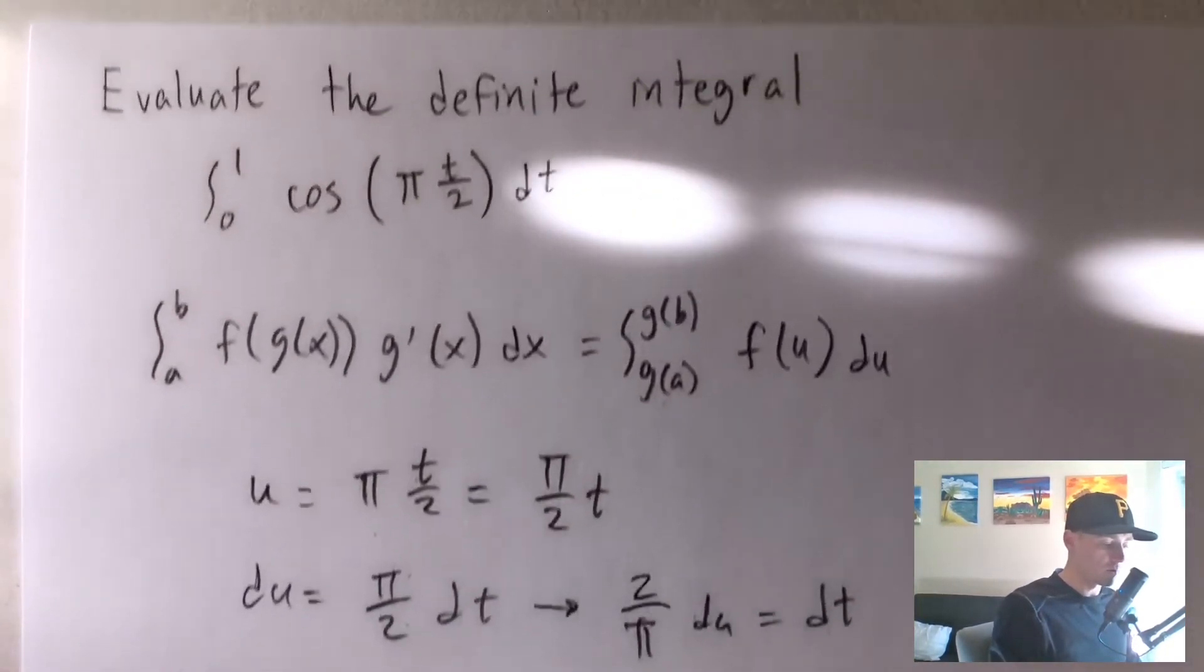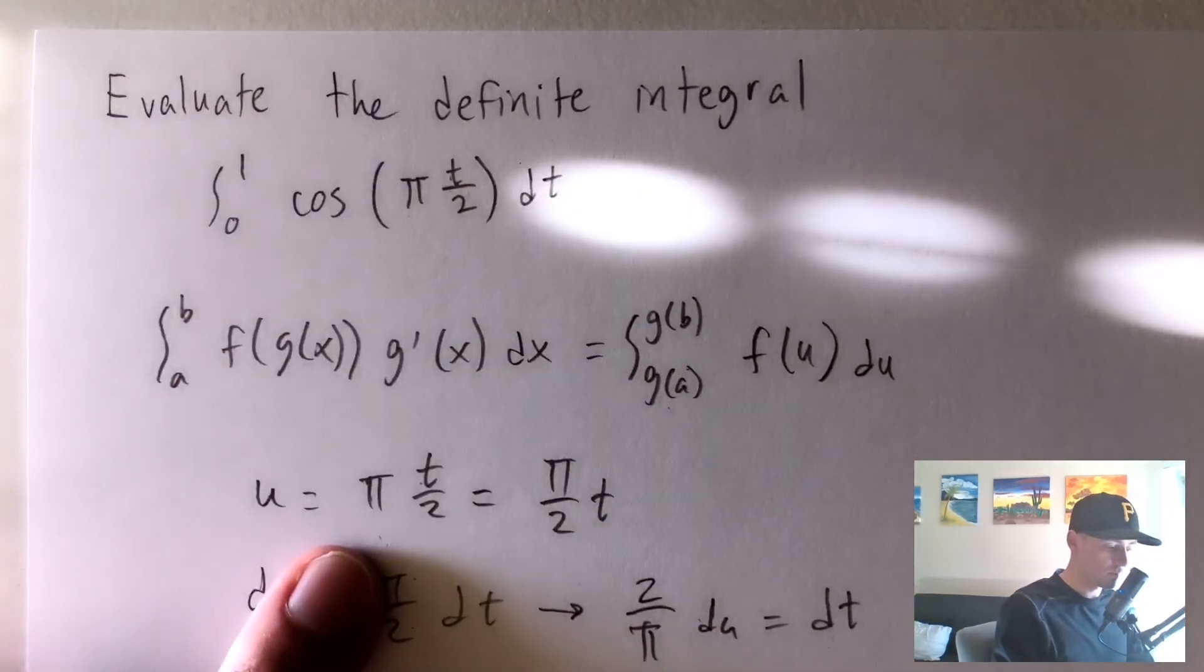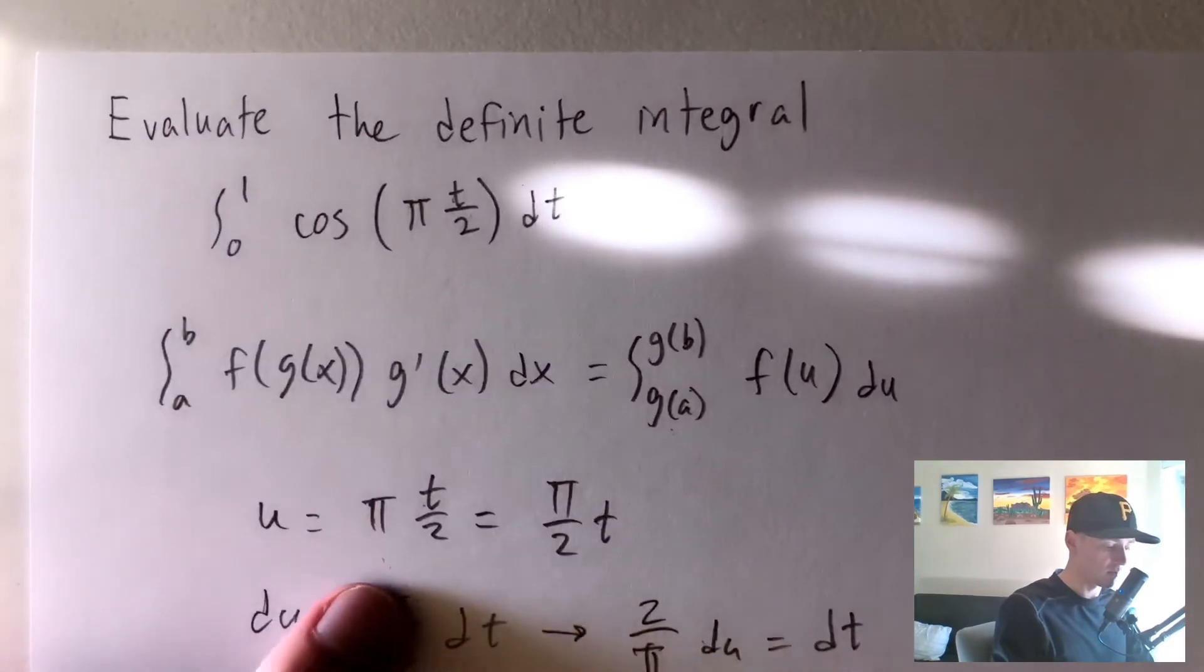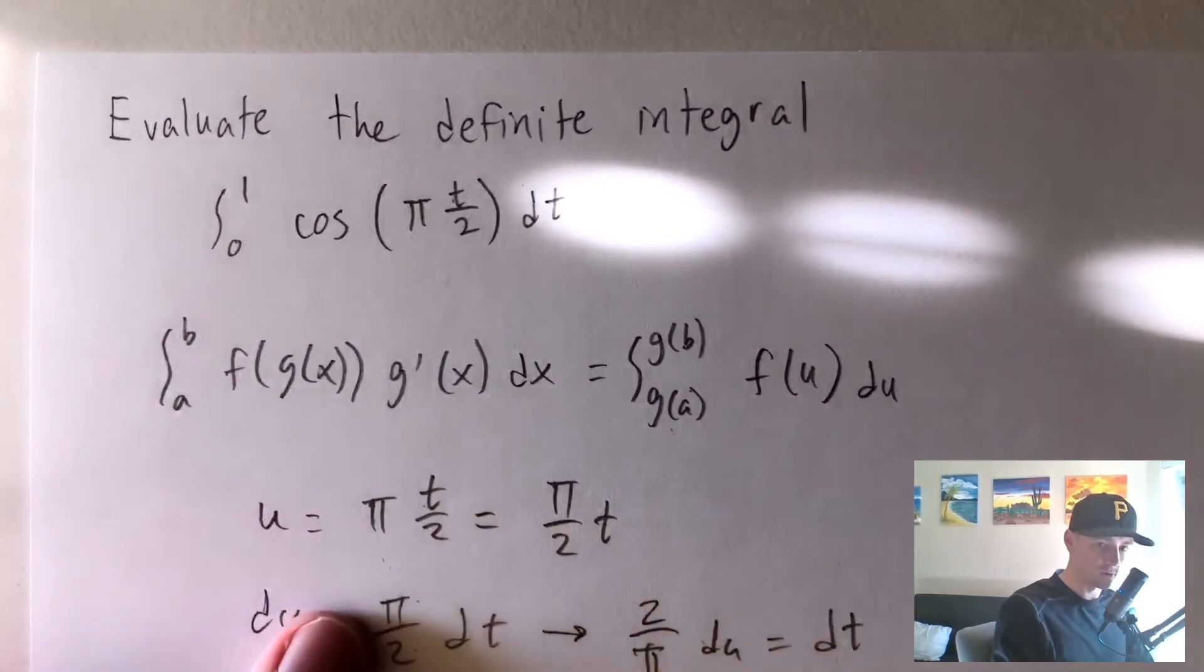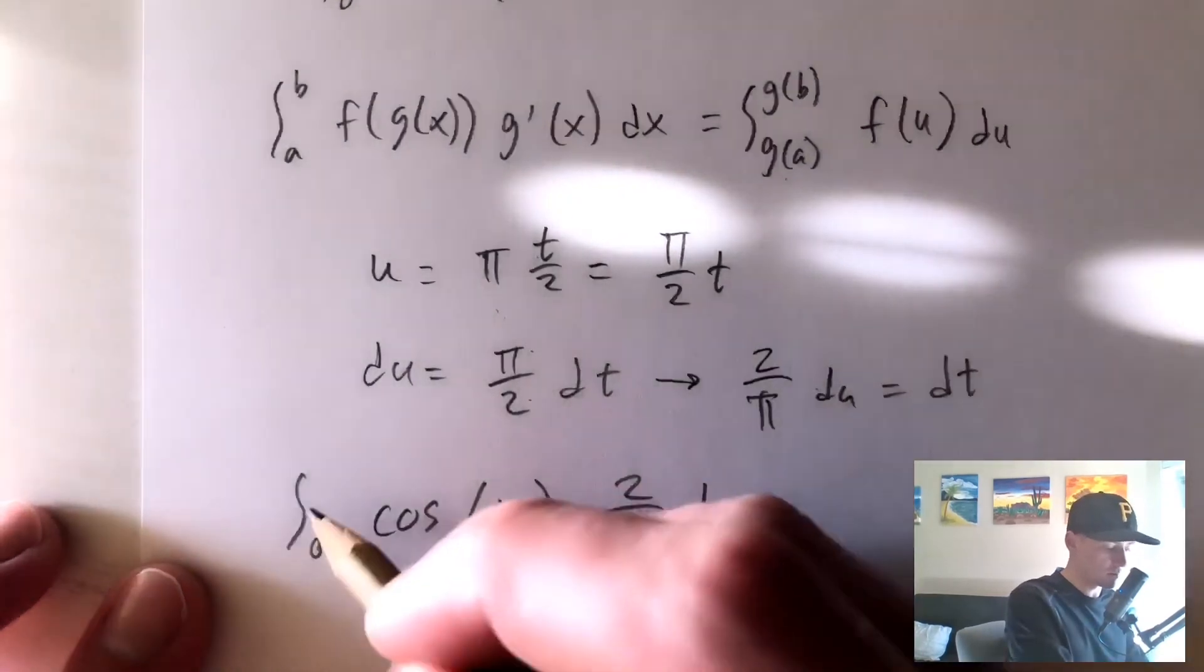And then our upper bound we need to plug our old upper bound into this function that we called u. So plugging 1 in for t is going to give us pi times 1 over 2, which is just pi over 2. So our new upper bound is just going to be pi over 2.